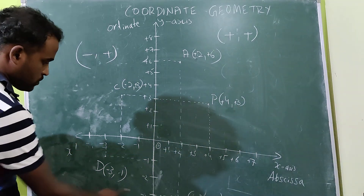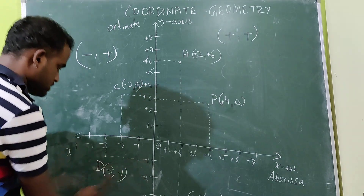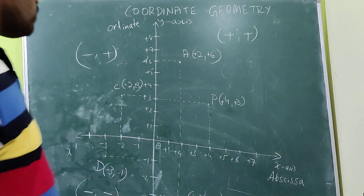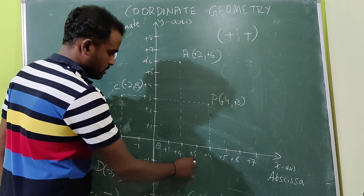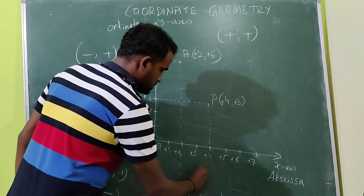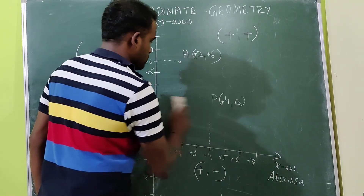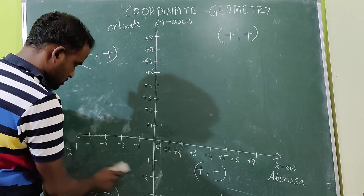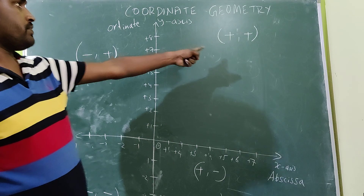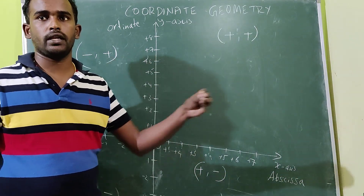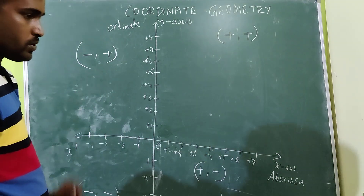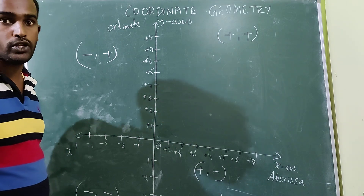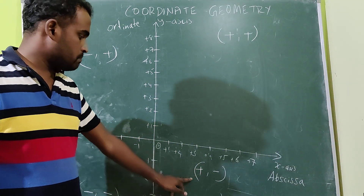In the third quadrant, both values are negative: minus, minus. In the fourth quadrant it is plus, minus. So to summarize: first quadrant — plus, plus; second quadrant — minus, plus; third quadrant — minus, minus; fourth quadrant — plus, minus.